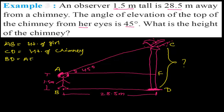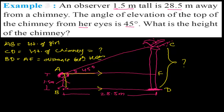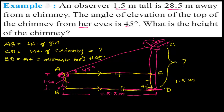AF is the distance between the girl and the chimney. Now, the horizontal line from the girl's eyes and the base line are parallel, forming a rectangle. In a rectangle, opposite sides are equal and parallel. So if AB is 1.5 meters, then FD is also 1.5 meters, and AF equals BD equals 28.5 meters.